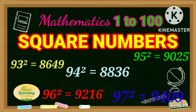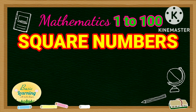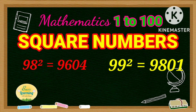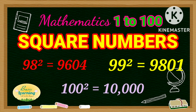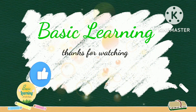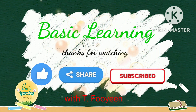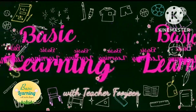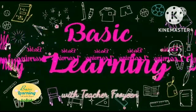Square of 98 is 9,604. Square of 99 is 9,801. Square of 100 is 10,000.